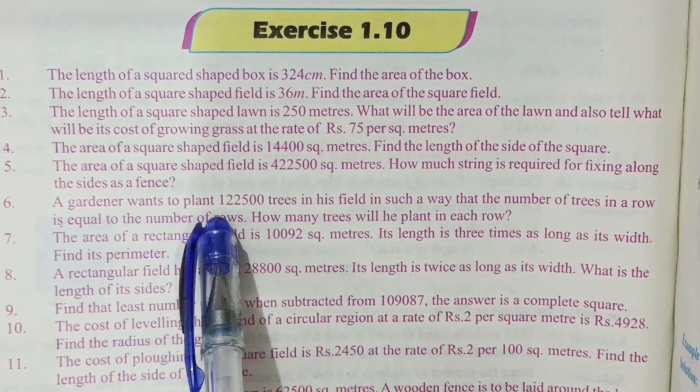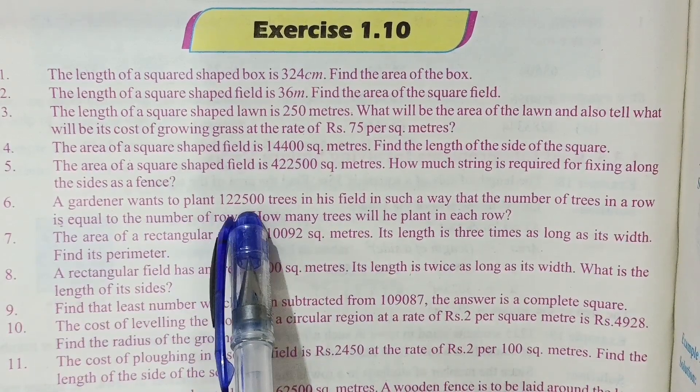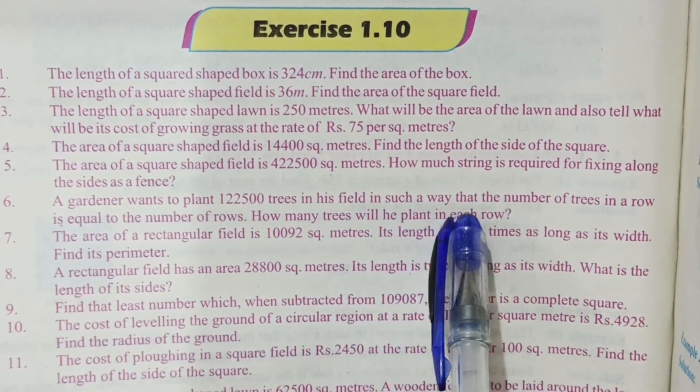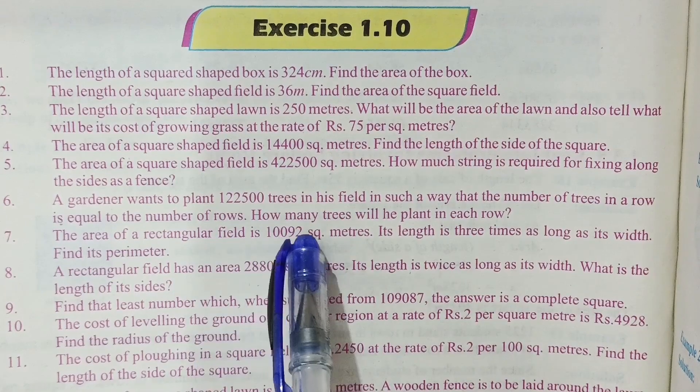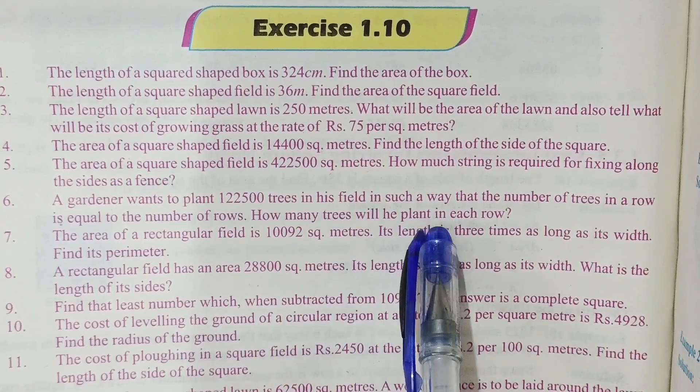Question number 6 is given: A gardener wants to plant 1,22,500 trees in his field in such a way that the number of trees in a row is equal to the number of rows. How many trees will he plant in each row?